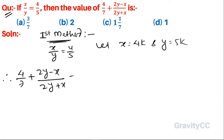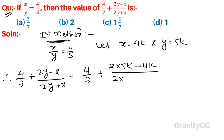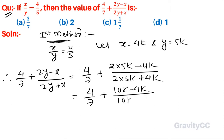Therefore, 4 upon 7 plus (2y minus x) upon (2y plus x) equals 4 upon 7 plus (2 into 5k minus 4k) upon (2 into 5k plus 4k), which equals 4 upon 7 plus (10k minus 4k) upon (10k plus 4k), giving 4 upon 7 plus 6k upon 14k.